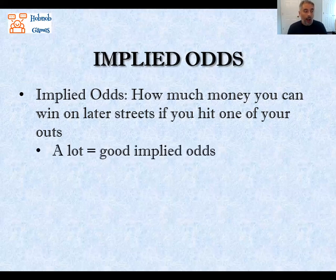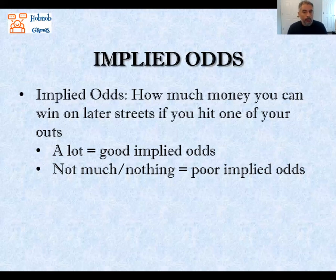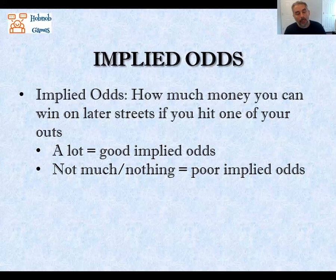If you believe you can make a lot of money on later streets if you hit one of your outs, then we'd say you have very good implied odds. But if the answer is not much — once the draw gets there, all your opponents are going to fold — then we'd say you have very poor implied odds. We need to be precise in calculating our implied odds. Part of it is science, so we'll do a little math, but part of it is also an art in terms of reading your opponents.